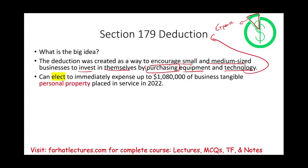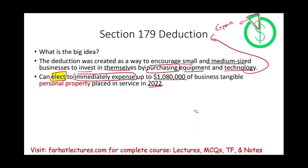The company can elect — notice it's an election, you can take it or not — to immediately expense up to $1,080,000 of business tangible personal property. That amount is for 2022; if you're viewing this in a later year, the amount will be different — it changes from year to year. The key point: there's an amount you can immediately expense, and it must be tangible, meaning physical, and it's personal property in contrast to real property, which is a building.